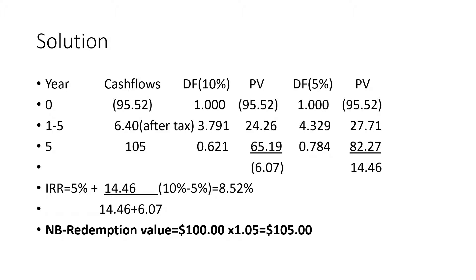IRR = 5% + [14.46 / (14.46 + 6.07)] × (10% − 5%) = approximately 5.52%. This is the cost of the redeemable debt.